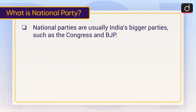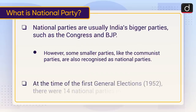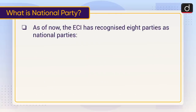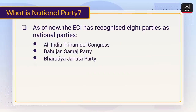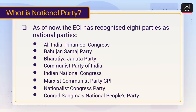National parties are usually India's bigger parties such as the Congress and BJP. However, some smaller parties like the Communist parties are also recognized as national parties. At the time of the first general elections in 1952, there were 14 national parties in India. As of now, the ECI has recognized eight parties as national parties: All India Trinamool Congress, Bahujan Samaj Party, Bharatiya Janata Party, Communist Party of India, Indian National Congress, Communist Party of India (Marxist), Nationalist Congress Party, and Conrad Sangma's National People's Party.